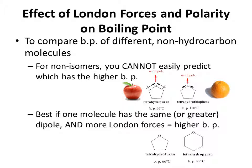For example, tetrahydrofuran versus tetrahydropyran. Tetrahydrofuran and tetrahydropyran have the same dipole moments — the same CO bonds pointing in the correct direction. But with tetrahydropyran, we have an additional CH2 group, which gives it more London forces. Thus, as we would predict, tetrahydropyran has a higher boiling point — 88 degrees Celsius versus 66 for tetrahydrofuran. This would be an apple-to-apple comparison: tetrahydropyran has the larger surface area and thus a larger London force and higher boiling point.